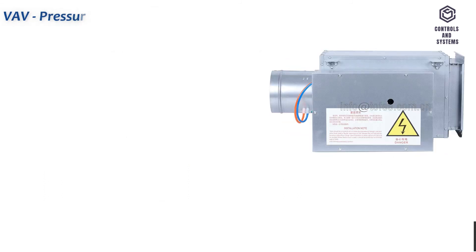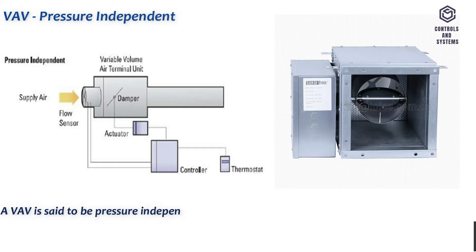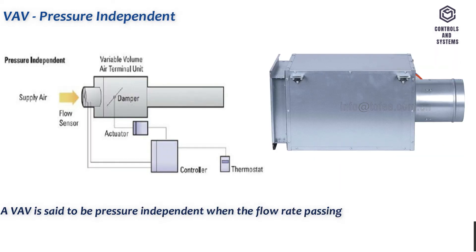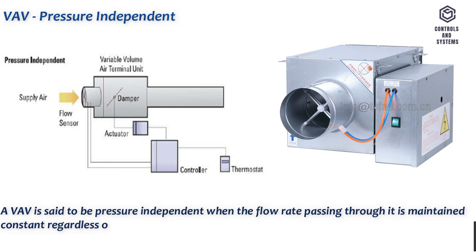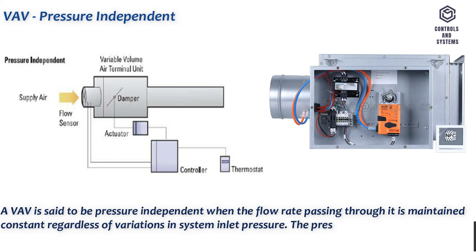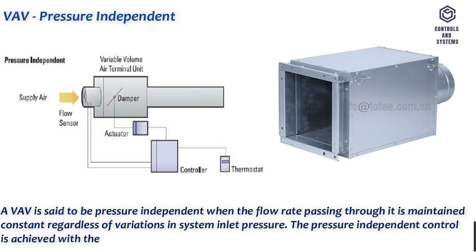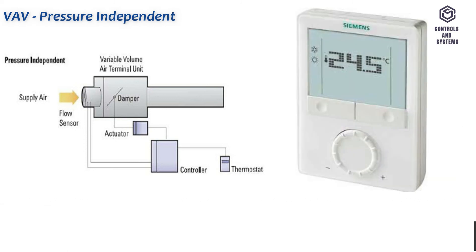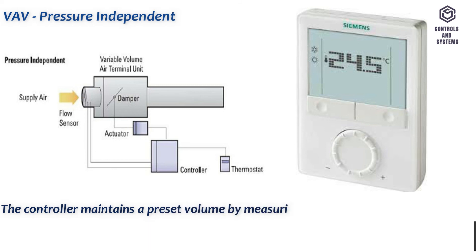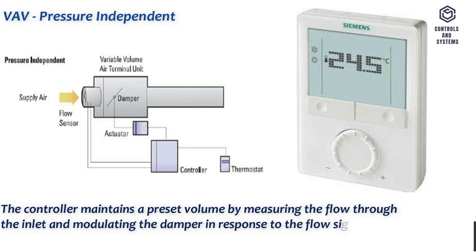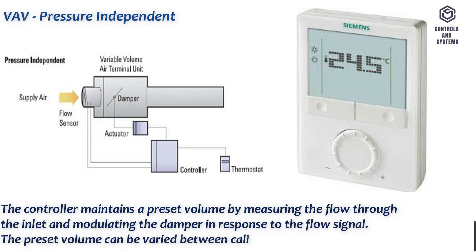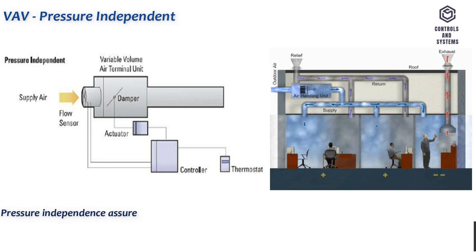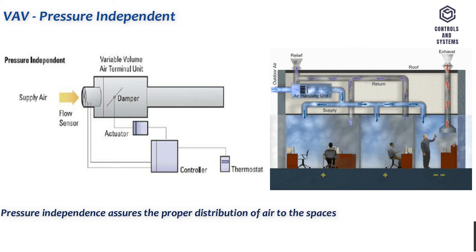A VAV is said to be pressure independent when the flow rate passing through it is maintained constant regardless of variations in system inlet pressure. Pressure independent control is achieved with the addition of a flow sensor and flow controller to the VAV box. The controller maintains a preset volume by measuring the flow through the inlet and modulating the damper in response to the flow signal. The preset volume can be varied between calibrated limits by the thermostat output.